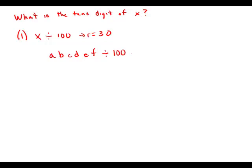We divide by 100. What happens is all the digits from the 100s place up, that becomes the quotient, a, b, c, d, and the remainder is the last two digits.